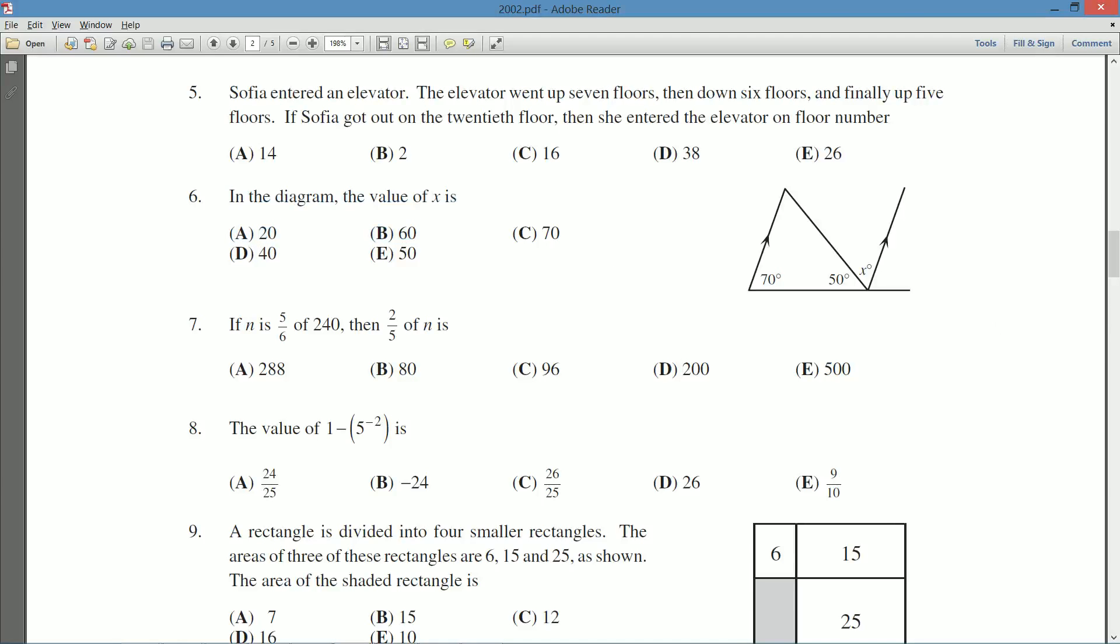It's a very short statement followed by a little picture. In the diagram, the value of x is, so here we've got 70 degrees, 50 degrees, x degrees, and we're told one other piece of information here.